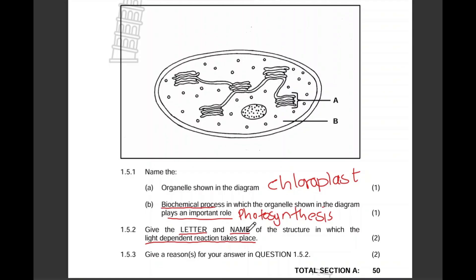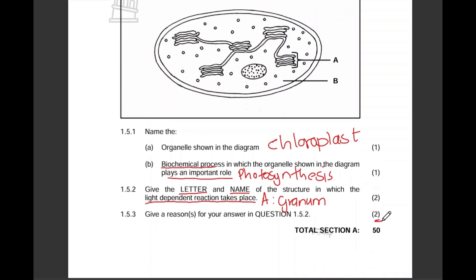The letter will be A and the name will be granum. Give a reason for your answer — two marks: part A contains chlorophyll, which will absorb light energy.